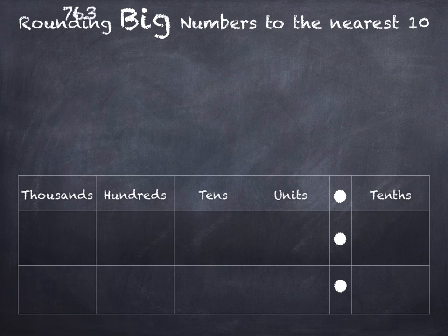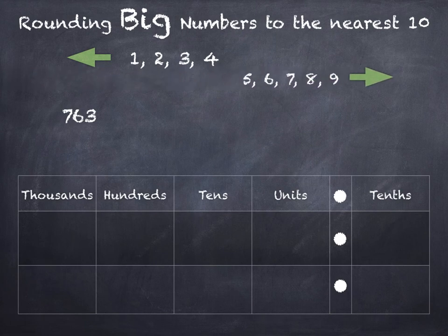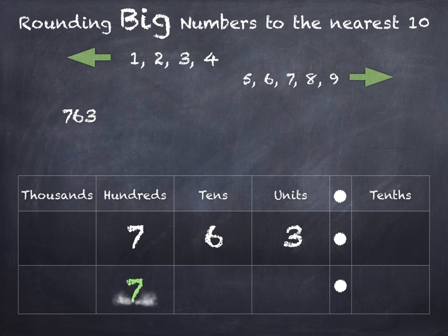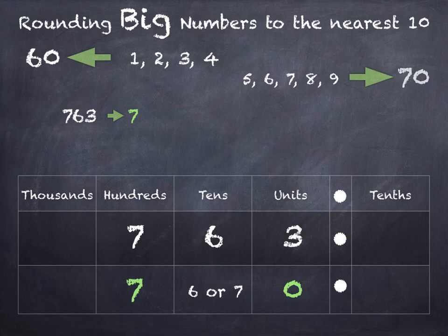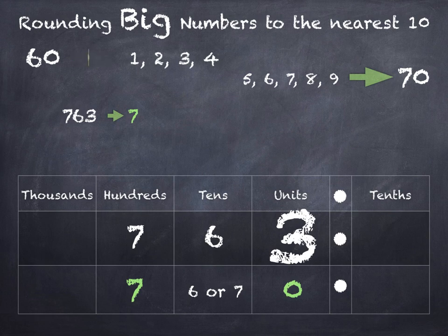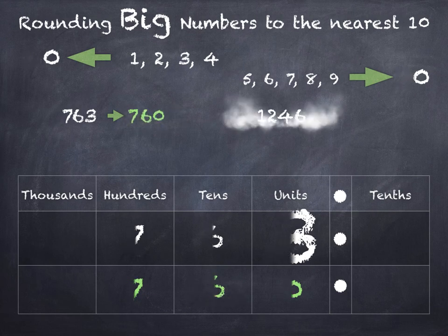Let's look at some bigger numbers and rounding them to the nearest 10. How about 763? Remember if the units is 1, 2, 3 or 4 we round down, and if the units is 5, 6, 7, 8 or 9 we round up. We're rounding to the nearest 10 so the hundreds will stay the same. The tens will be 6 or 7 — it will round down to 60 or up to 70 — and the units will be 0. The units digit is 3, and numbers 1, 2, 3 and 4 always round down, so the tens becomes a 6. 763 rounds to 760.